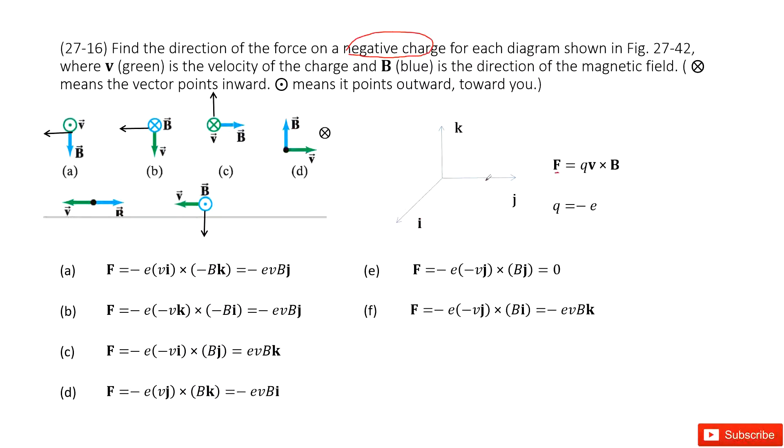And then in this space, we have I, J, K directions. And they tell you this charge is a negative charge. So Q equals negative e. Agree? Yes. Now we can do it together.